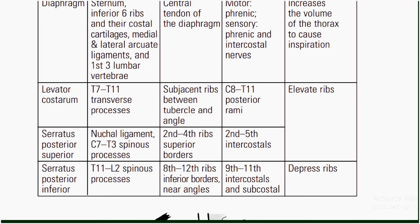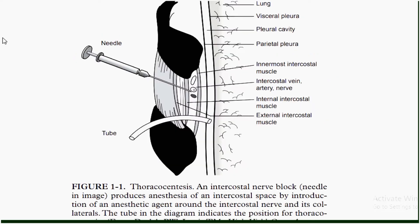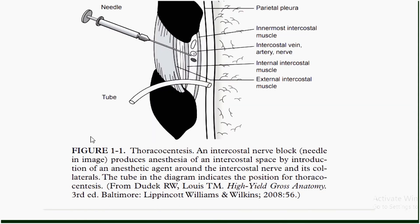This diagram represents thoracocentesis and an intercostal nerve block. The nerve block needle produces anesthesia of an intercostal space by introduction of an anesthetic agent around the intercostal nerve and its collaterals. The tube in the diagram indicates the position of the thoracocentesis.